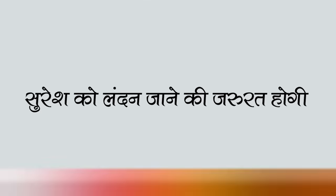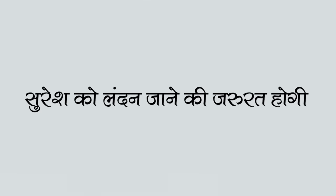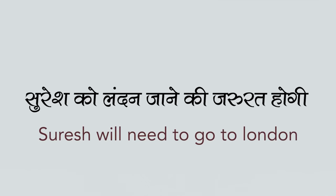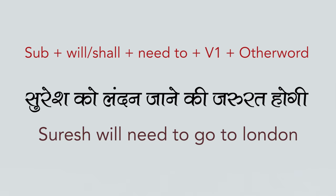Now let's take the second sentence. The second structure is: Subject plus will, plus need to, plus V1, plus other word. Suresh needs to go to London is an example of the first structure. Now the second structure — Subject plus will, plus need to, plus V1, plus other word — allows you to say many sentences.